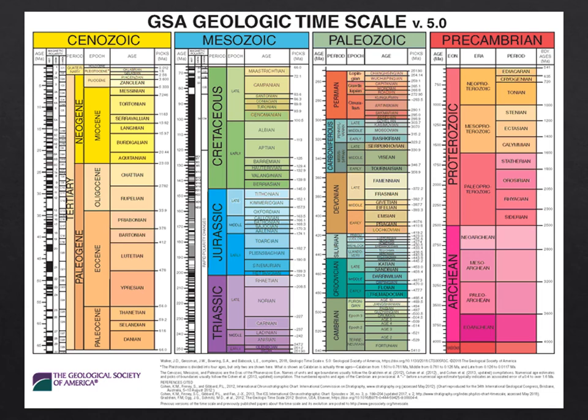The Mesozoic era, the middle era of time, has three periods to know, in order from bottom to top: the Triassic, which lasted from 250 to 200 million years ago; the Jurassic, which lasted between 200 and 145 million years ago; and the Cretaceous period, which lasted between 145 and 66 million years ago. At the end of the Cretaceous period, we had the dinosaur extinction event — a mass extinction where lots of things died.